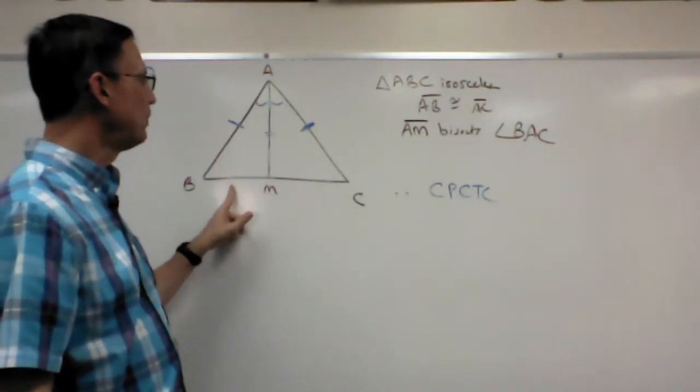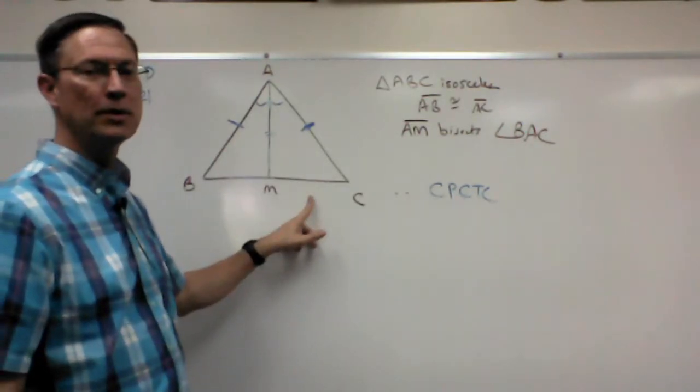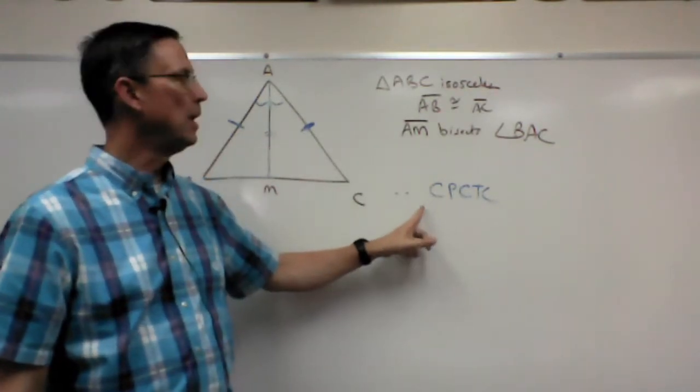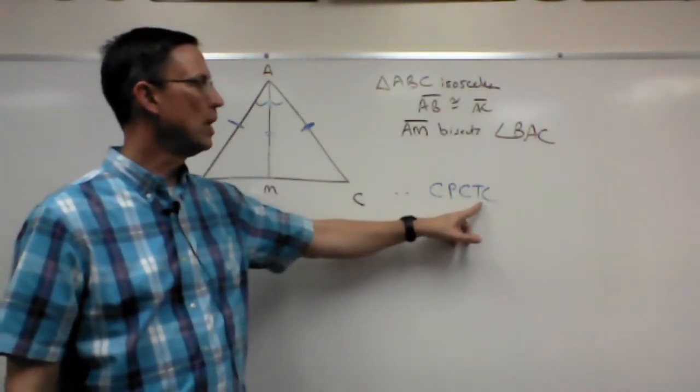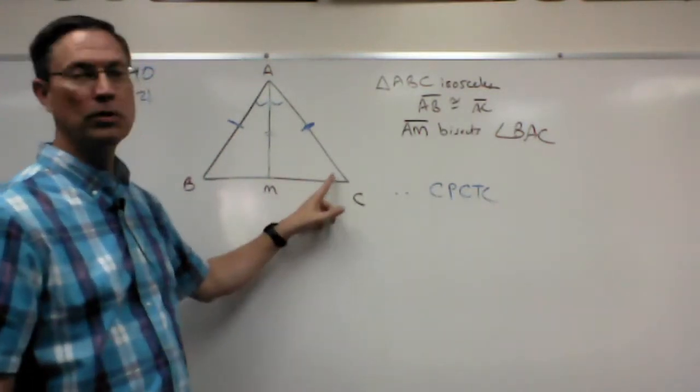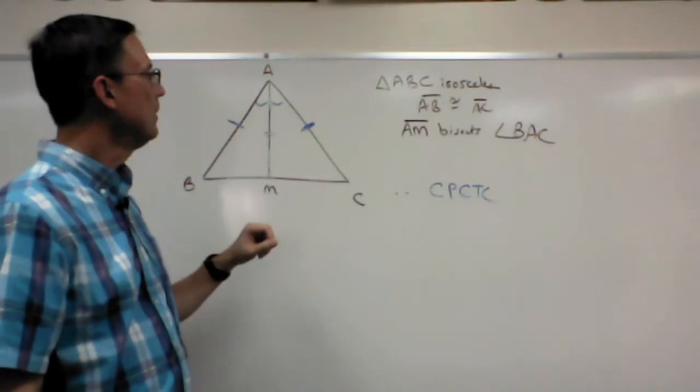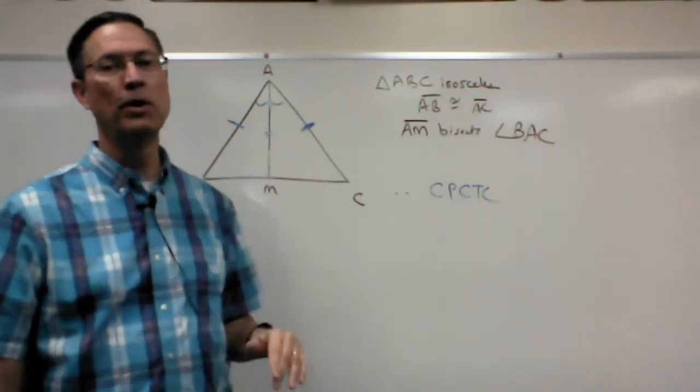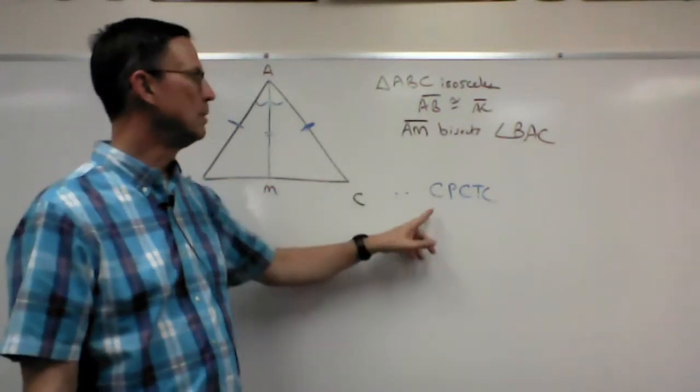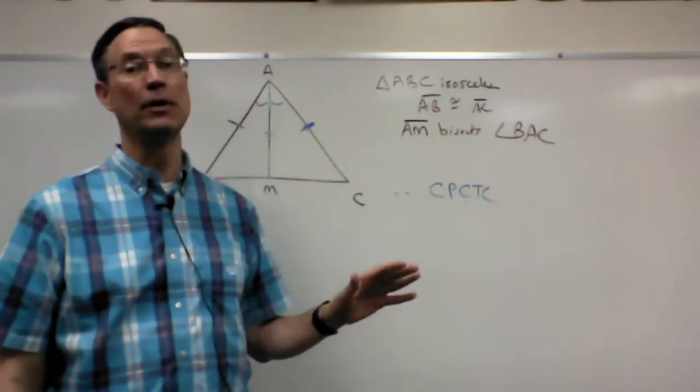So this part here corresponds to this part, and so therefore they must be congruent. So corresponding parts of congruent triangles are congruent. I could say that this angle down here is congruent to this angle. So the corresponding parts of congruent triangles are congruent, and we thankfully can just write the abbreviation, and we don't have to write that out every time.